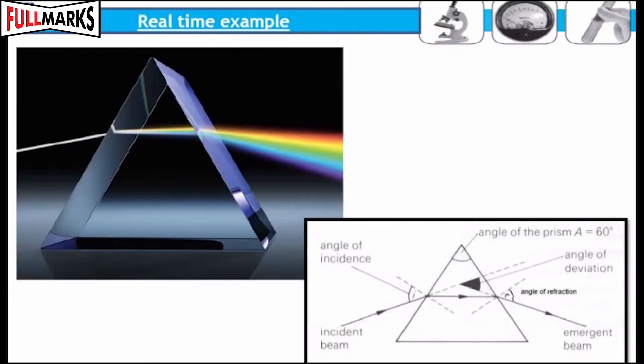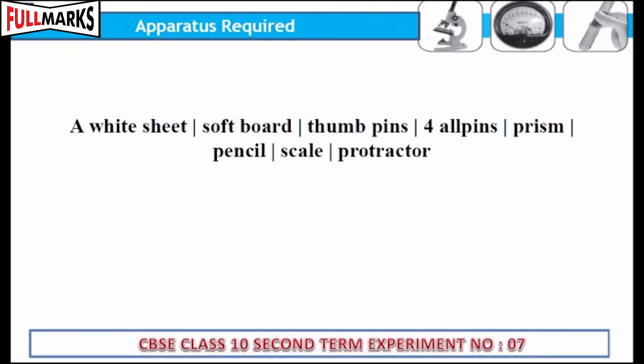Real-time example: A dispersive prism can be used to break light up into its constituent spectral colors, the colors of the rainbow. Apparatus required: a white sheet,